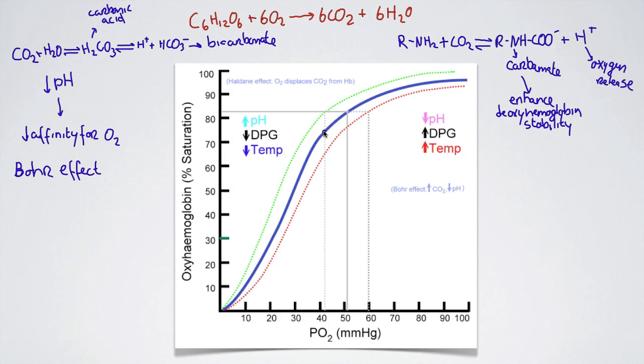Which is a good thing, once again, because more oxygen will be delivered to the muscles, to the tissues that need them. So that's pretty much it. I hope that makes sense with all these equations that we have here. Cellular respiration, formation of bicarbonate by means of carbonic acid, and the formation of carbamate, which enhances the deoxyhemoglobin stability.